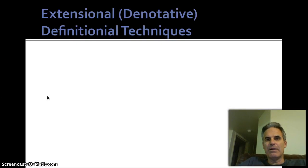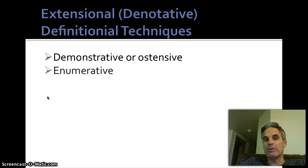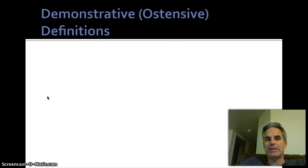Alright, so here are the extensional or denotative definitional techniques. They are demonstrative or ostensive, enumerative, and definition by subclass. These three are extensional techniques, so let's look at them individually.